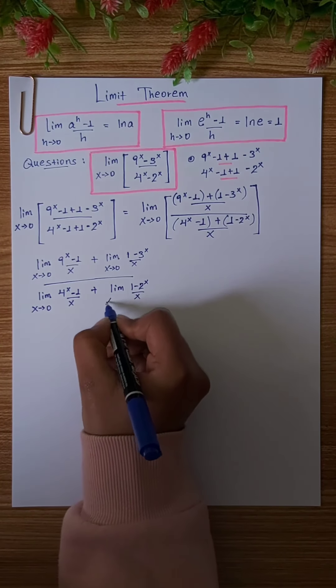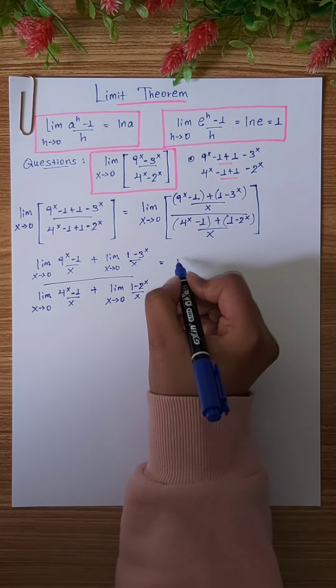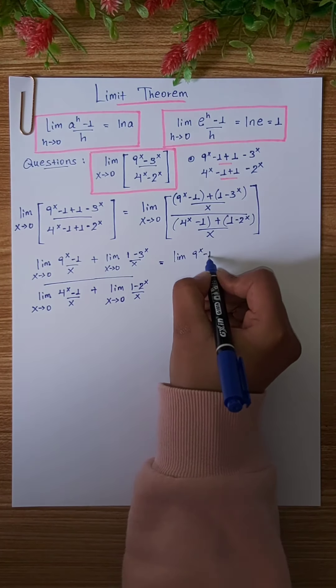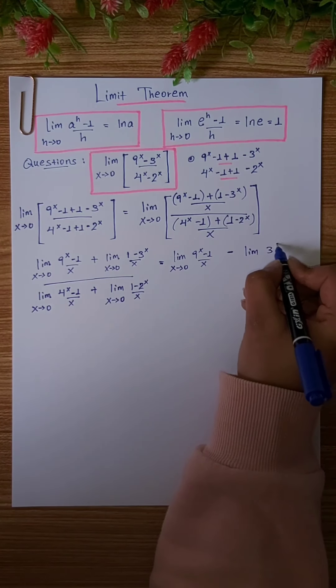As you can see, limit 1 minus 3 to the power of x, and a to the power of h minus 1, minus both of them.